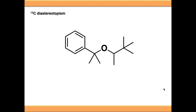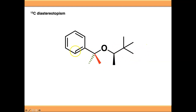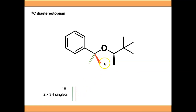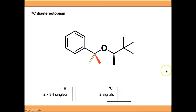Diastereotopism is not just limited to protons — it applies to anything where you have two atoms connected to the same carbon. For example, a geminal dimethyl group: two methyl groups attached to the same carbon with broken symmetry nearby. Drawing it in 3D, one methyl is always on the same face as the adjacent CH3 and one on the opposite face, breaking the plane of symmetry in the screen. Therefore the two methyl groups are not chemically equivalent, giving two 3H singlets in the proton NMR rather than one 6H singlet, and two separate carbon signals in the carbon spectrum.